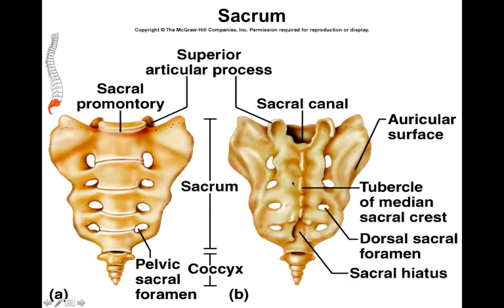The sacrum is made up of five fused vertebrae. The sacrum and the coccyx together make up the posterior wall of the pelvic cavity. The coccyx is made up of four fused vertebrae — sacrum is five fused, coccyx is four fused. The coccyx is the tailbone, so when people say they fell on their tailbone, that's what they're talking about.